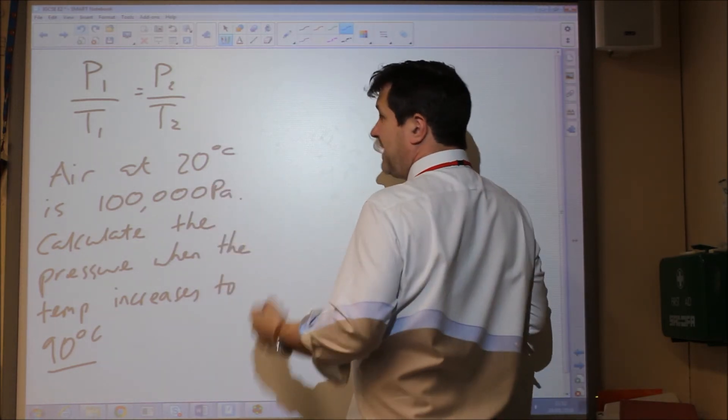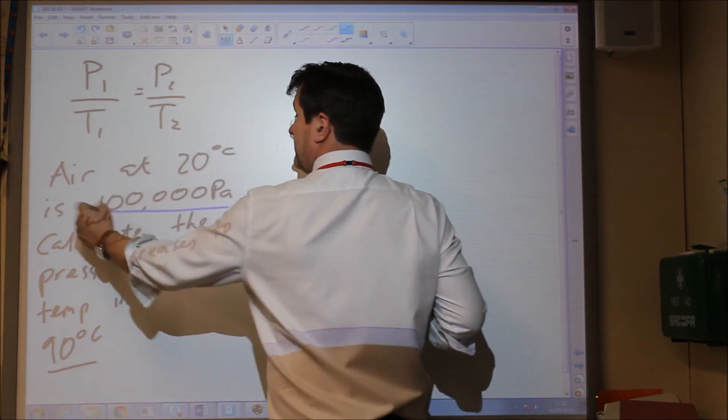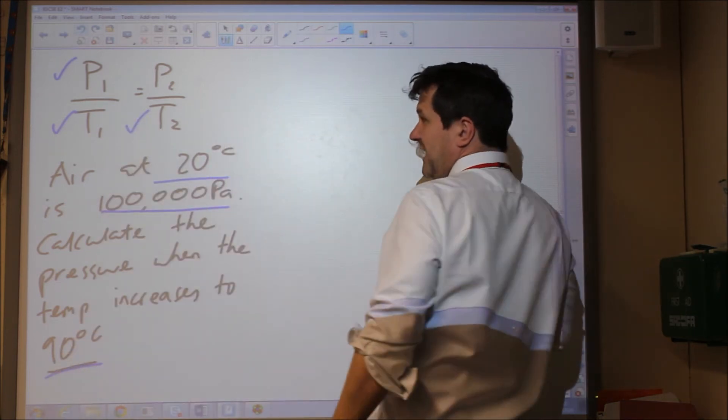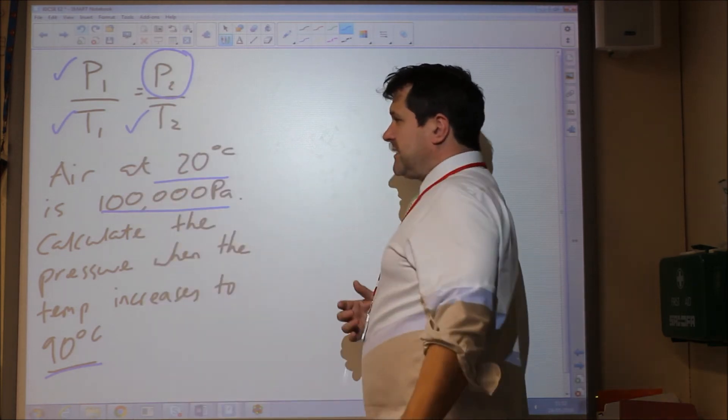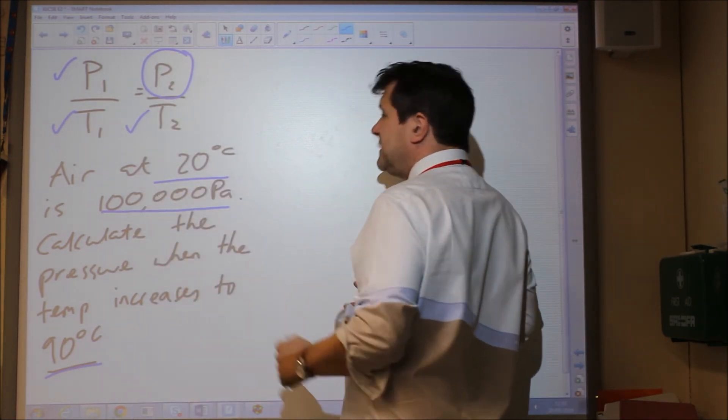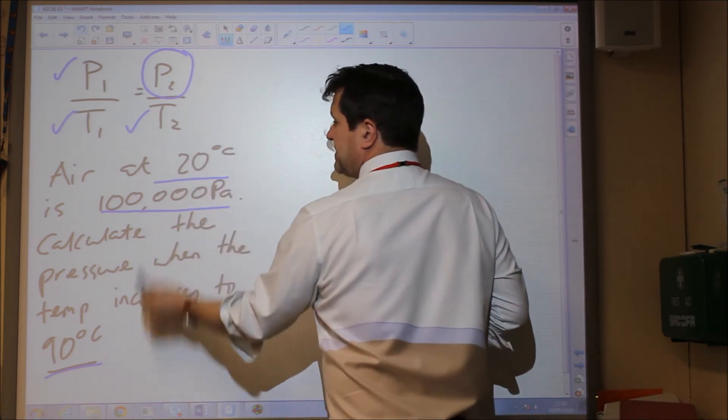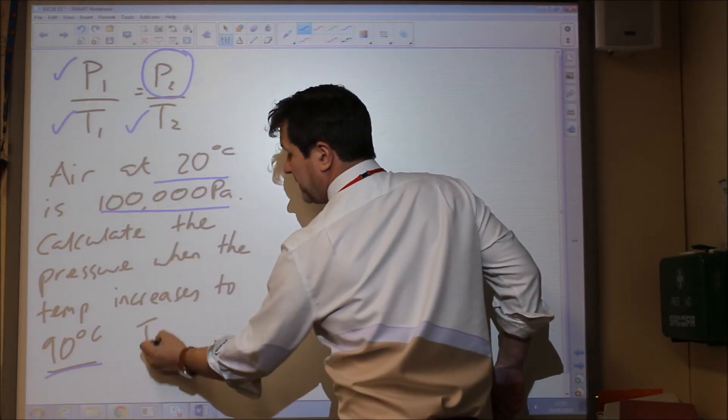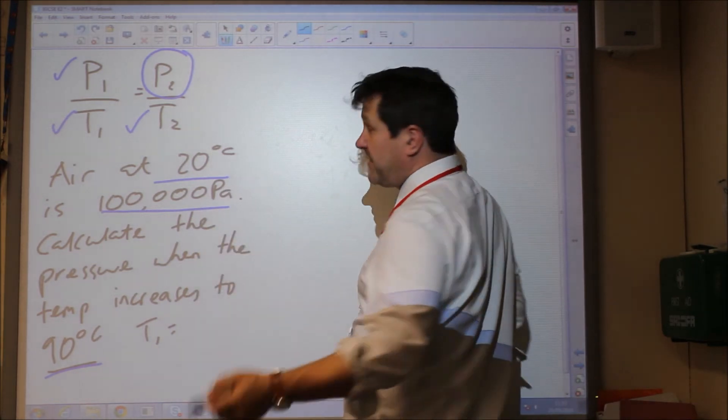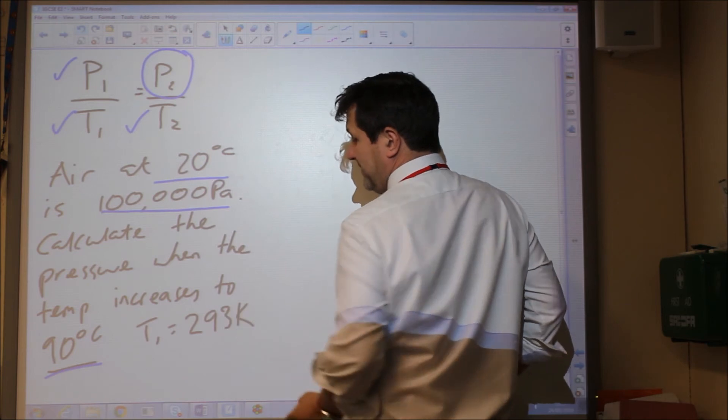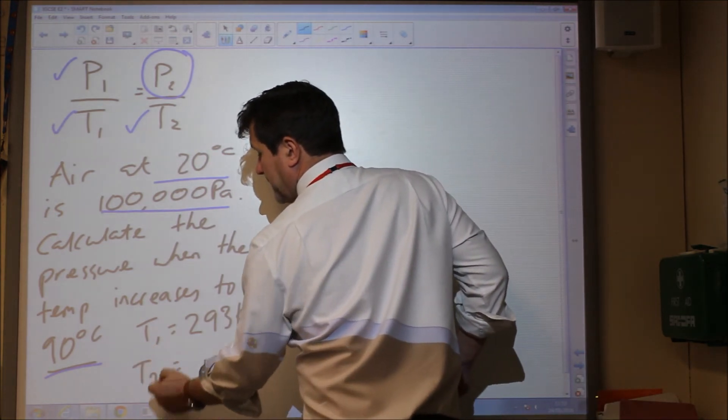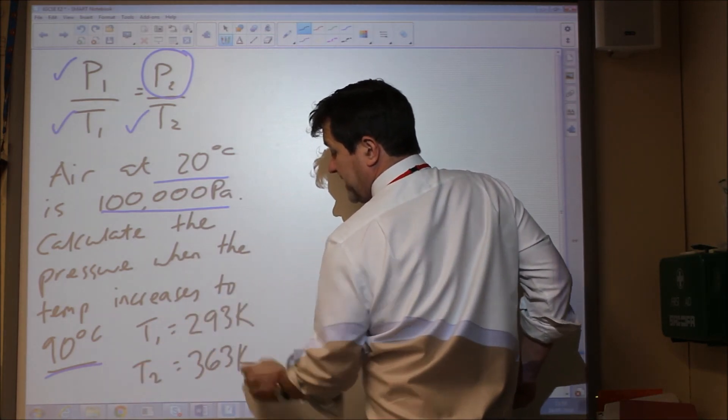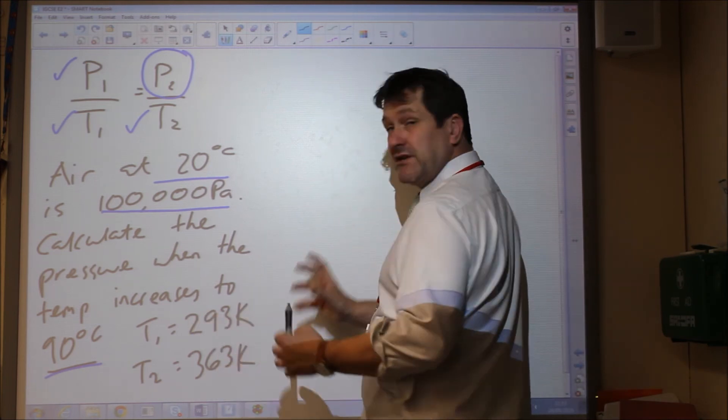All we would do is put the numbers in and rearrange the equation. We have P1, we have T1, we have T2, so we're trying to find P2. The most important thing here is to remember to convert these temperatures. So temperature 1 is 20 plus 273 which is 293 Kelvin, and T2 is 273 plus 90 which is 363 Kelvin. So temperature has gone up by 70 degrees or 70 Kelvin.